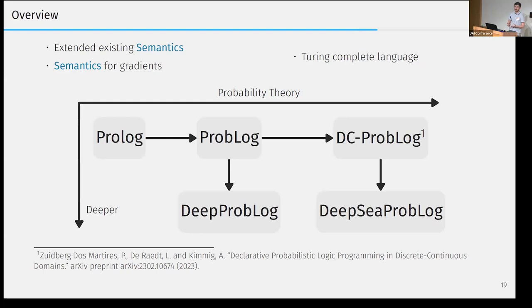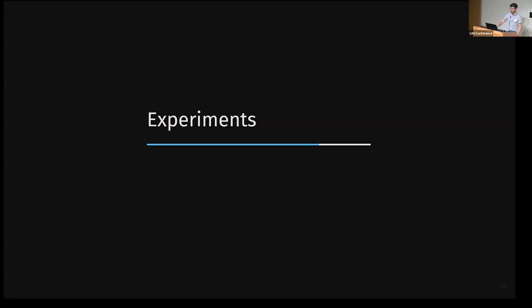Finally, DeepSea ProbLog is a member of the ProbLog family of declarative languages, which was over time extended to include more probability theory and to be able to express neural networks. And because of this, we made the final or at least the last step in this evolution by extending the semantics of ProbLog and Prolog to the complete discrete continuous domain. And since DeepSea ProbLog is a strict generalization of ProbLog, we do remain a Turing complete language.